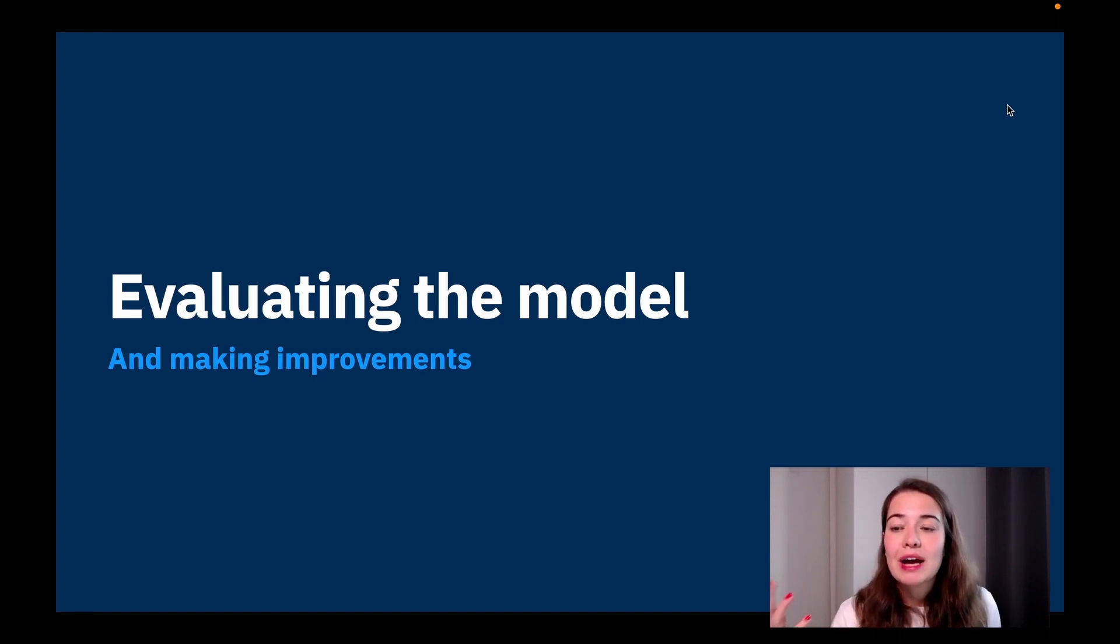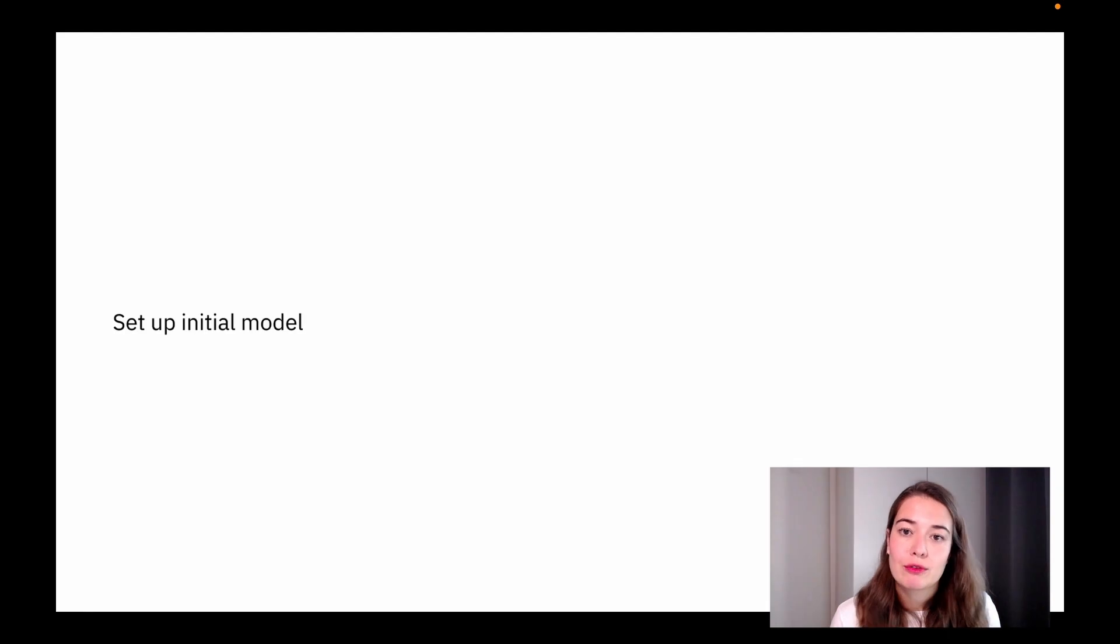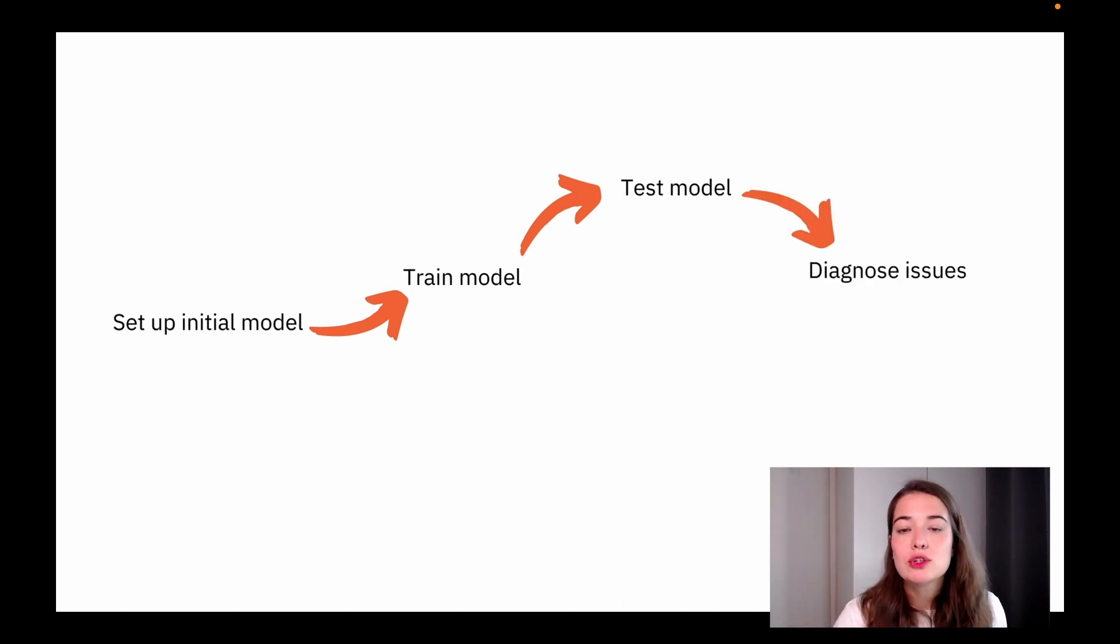So there is a kind of like a lifecycle to neural networks. What we do is we first set up an initial model, and then we train this model using the initial settings, and then we test it. And as a result of this training and testing, we have some evaluation metrics calculated. Once we have these metrics, we diagnose some of the issues that might be present with the neural network.